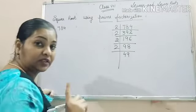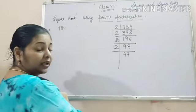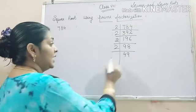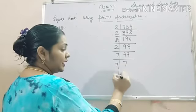Now, 49 is not divisible by 2. But, we know that 49 is divisible by 7. And 7 is a prime number. So, divide it by 7.